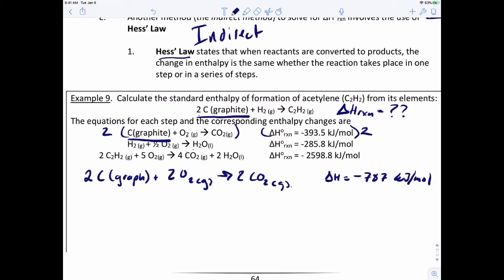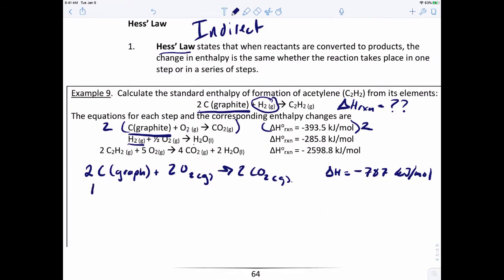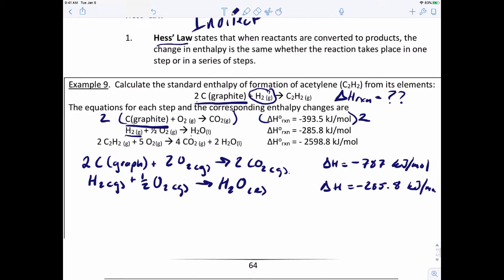So the next reaction contains hydrogen. We've got one mole of hydrogen in the reactant. We got one mole of hydrogen in the reactant. So that reaction is the same. We can just bring that reaction over as is, and we don't have to manipulate it at all. One half mole of O2 gas yields H2O liquid, and that enthalpy is going to be negative 285.8 kilojoules per mole.